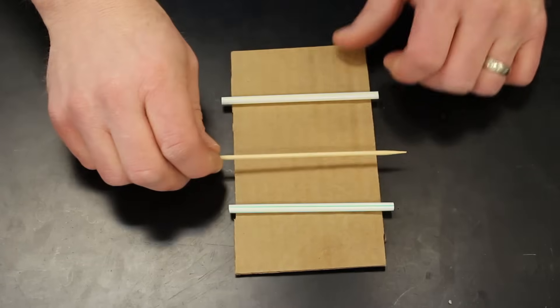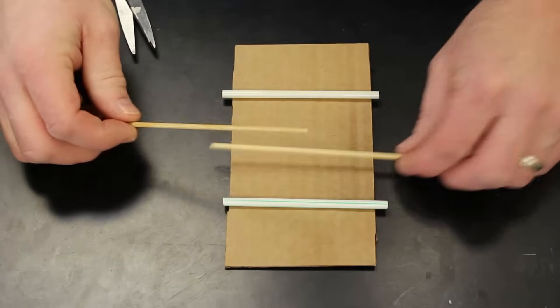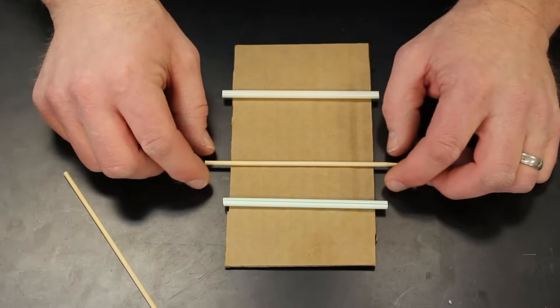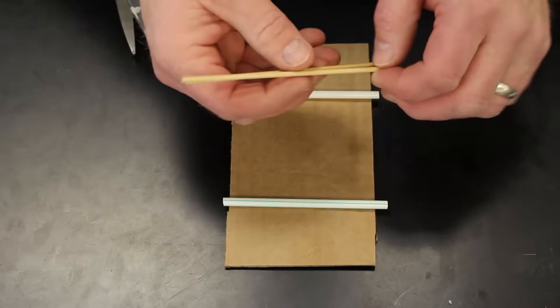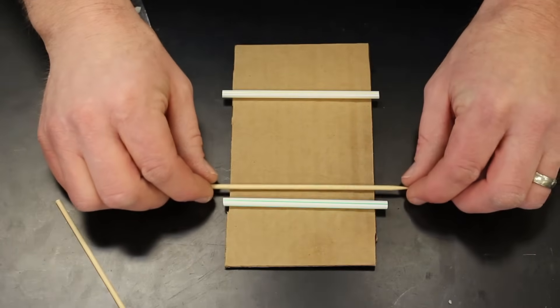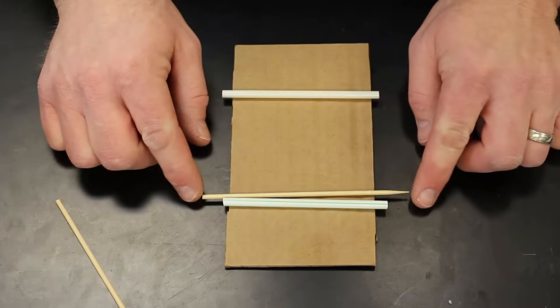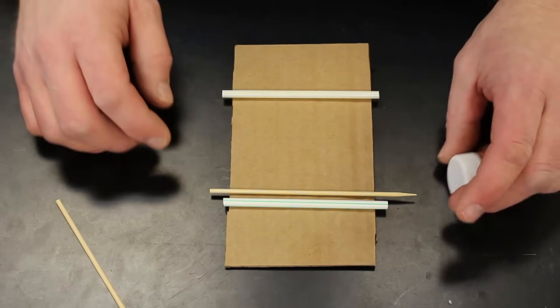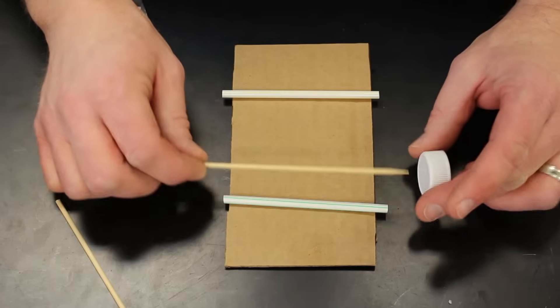Now we take our bamboo skewers. I've already cut these down a little bit—they usually come longer than this. I found a wire cutter works well to cut the edges on these, and I actually took a bunch and cut them on the band saw to get a clean cut. I want them to be a little bit longer than the straw, as you can see. The reason for that is we're going to put the caps on the bamboo skewer.